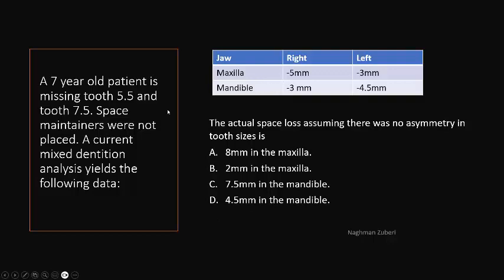This question was making a lot of students confused. A seven-year-old patient is missing tooth 55, the deciduous maxillary second molar, and tooth 75, the mandibular deciduous second molar. Space maintainers were not placed. A current mixed dentition analysis yields this data.